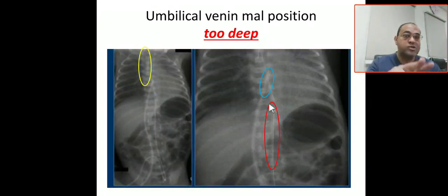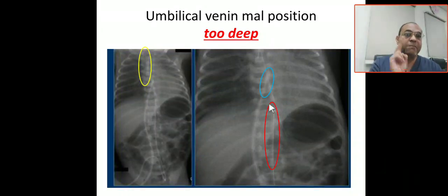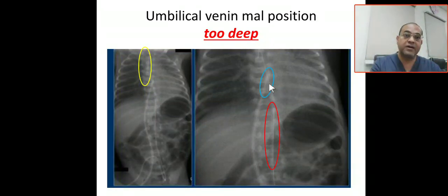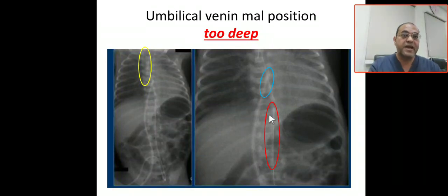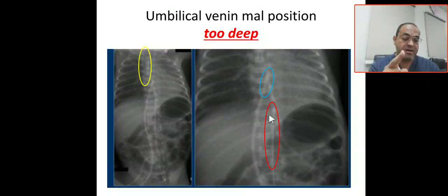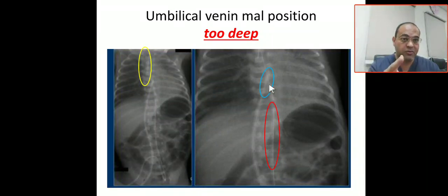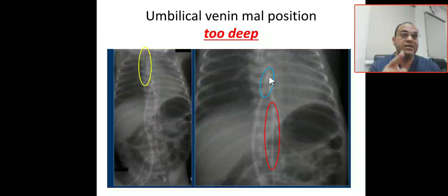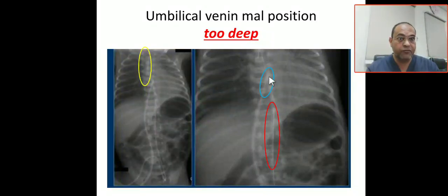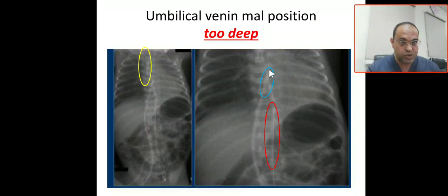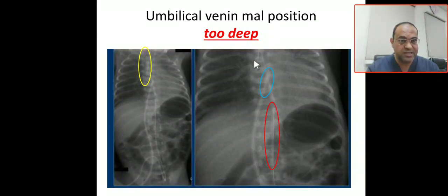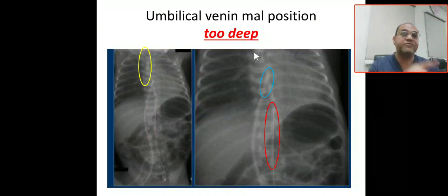So both the umbilical arterial catheter and the umbilical venous catheter are not in proper position. The umbilical vein is too deep — positioned in the heart — which can lead to perforation and arrhythmia. The umbilical arterial catheter is currently at T10 and needs to be advanced to T6-T9. Additionally, the tracheal tube is also too deep and should be one centimeter above the carina.